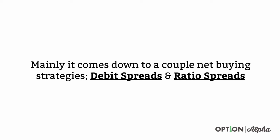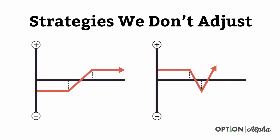In particular, the ones that we usually don't adjust — or really will never adjust — are debit spreads and ratio spreads, or back spreads, however you want to call them. On the left hand side you've got your debit spread, your typical call debit spread or put debit spread, and on the right hand side we've got our ratio spreads, which you can build with calls or with puts.